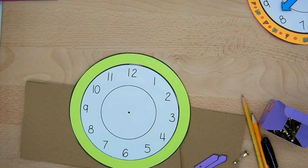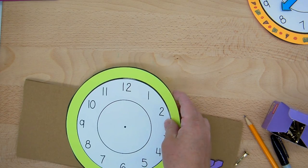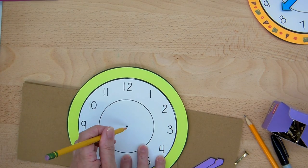The next thing I need to do is poke a hole in the center where that dot is. I'm going to use a sharp pencil for that.